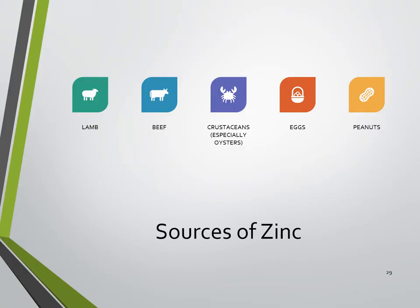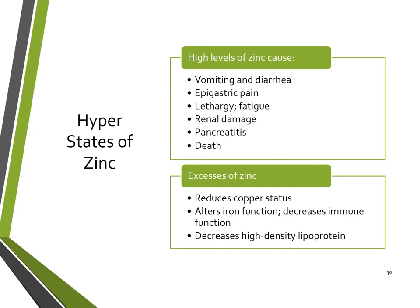Sources of zinc include lamb, beef, crustaceans especially oysters, eggs, and peanuts. Too much zinc can cause vomiting and diarrhea, epigastric pain, lethargy, renal damage, pancreatitis, and death. Excess zinc can reduce copper status, alter iron function, decrease immune function making you more prone to illness, and decrease high-density lipoproteins, which is harmful since we want more HDL cholesterol.